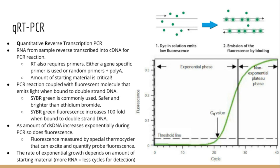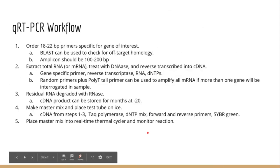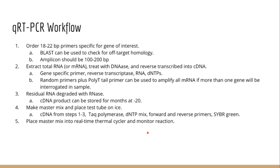Another common method involves using nested primers within your gene of interest that get digested by the polymerase's exonuclease activity. These nested primers contain a fluorescence probe joined with a quencher. However, when the polymerase digests the nested primer, it releases the fluorescent probe from the quencher and produces fluorescence — so that's another way to measure the amount of double-stranded DNA in your sample.